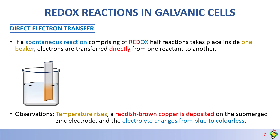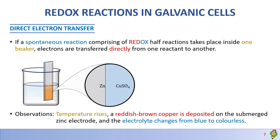Let's zoom into the atomic level and see what happens in redox reactions. Zinc metal is reacting with copper sulfate. The copper sulfate electrolyte is an aqueous solution, which means it will split into copper 2+ ions and sulfate ions. We call these spectator ions and we usually ignore them when we write our half reactions and net ionic reactions.